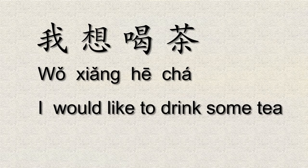Whereas 要 is about wanting or needing to do something. Here's another example: if I was walking on the street and I said 我想喝茶, I'm thinking about it — like 'Oh, I'd like to drink some tea,' but I haven't quite decided yet. I'm just sort of thinking about that.